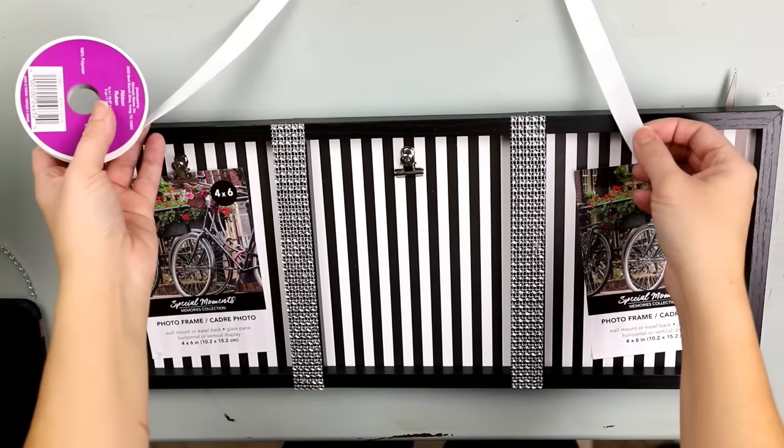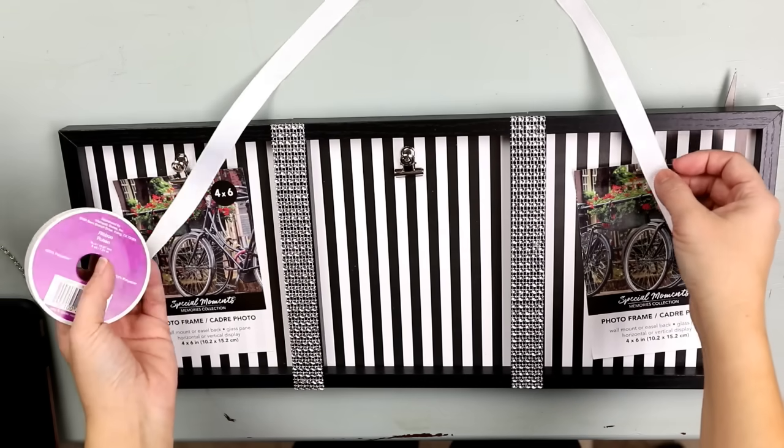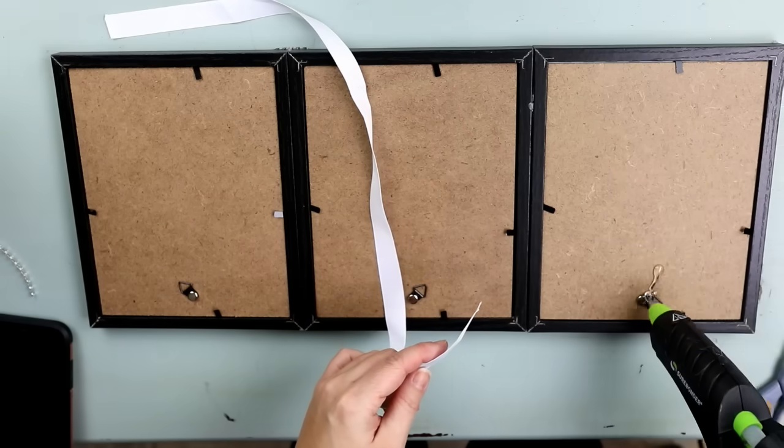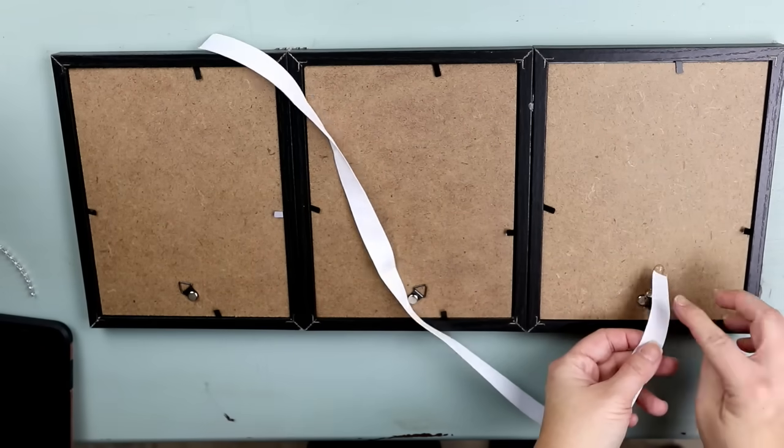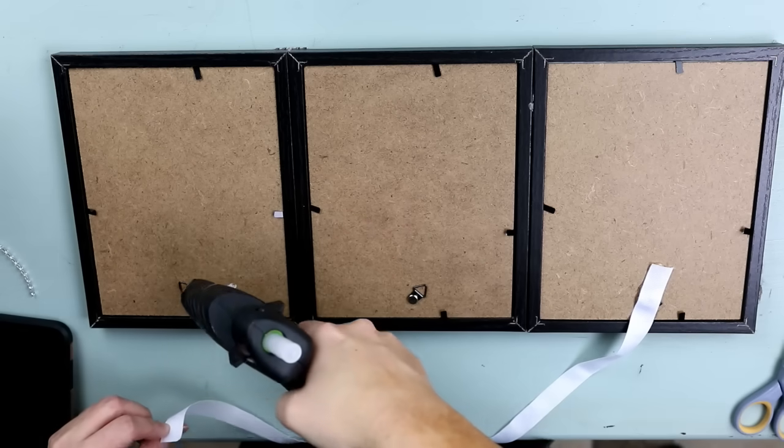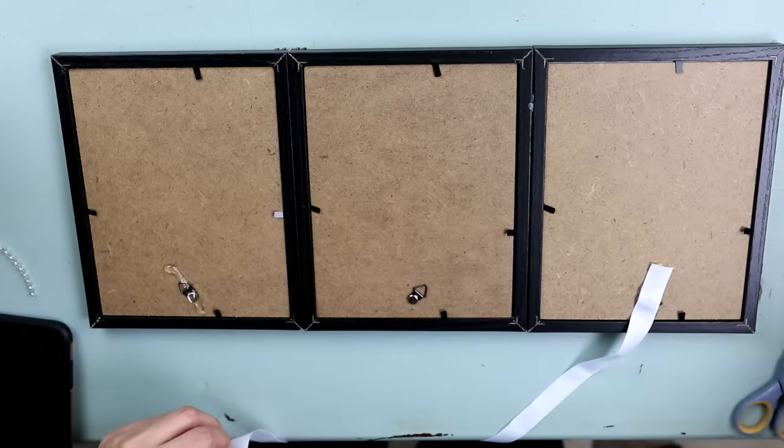Before I do that I'm going to make a little wall hanging here. So I'm just taking some white ribbon that I had on hand and I'm going to hot glue it to the back. That way I could hang it up with a nail or anything that I had hanging on the wall.